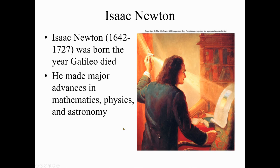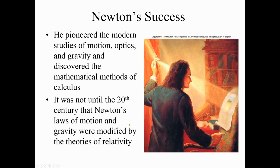Isaac Newton, 1642 to 1727, was born the year Galileo died. He made major advances in mathematics, physics, and astronomy. He created calculus and used that to further our understanding of mathematics, physics, astronomy, and science in general. He pioneered the modern study of motion, optics, and gravity.